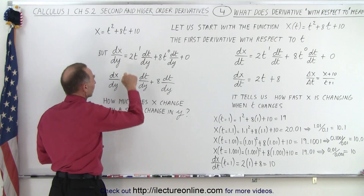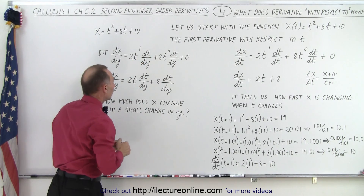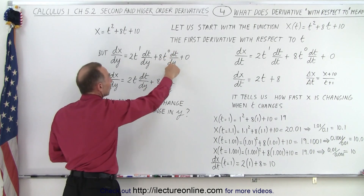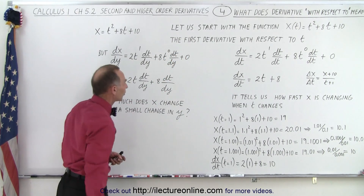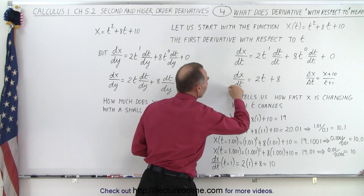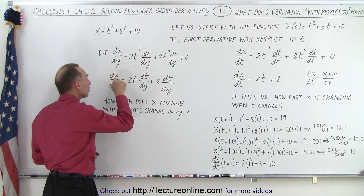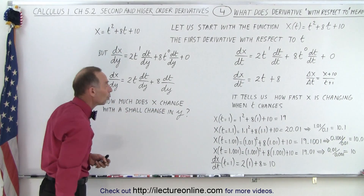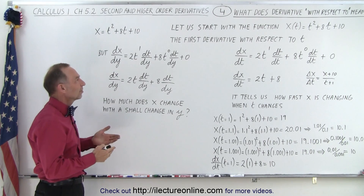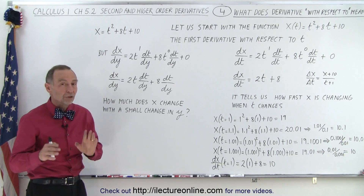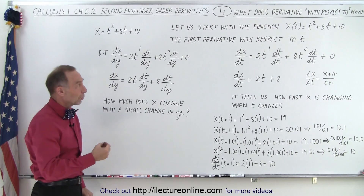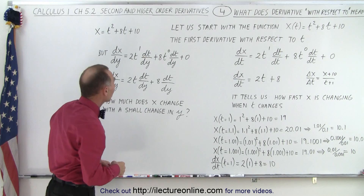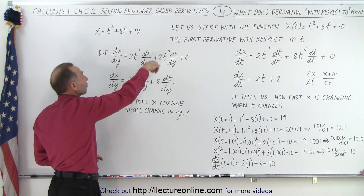Simplifying, we get 2t times dt/dy, but dt/dy doesn't become 1 because it's not equal to 1. Plus 8 times t to the 0 power which is 1, so 8 times dt/dy. Instead of getting 2t plus 8 as before, we get this expression because we took the derivative with respect to y. This represents how much x changes with a small change in y. Since the function is not a function of y, we can't simplify further — but it shows that 'with respect to' really means we're differentiating relative to a particular variable.